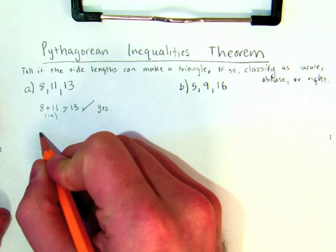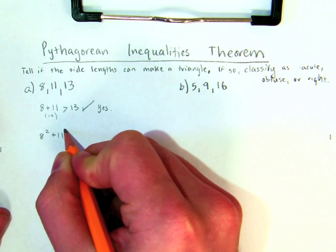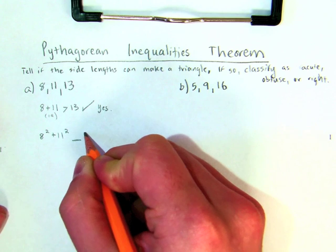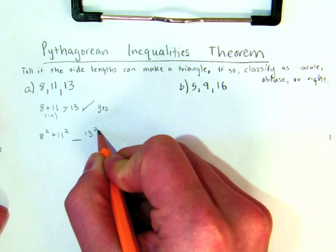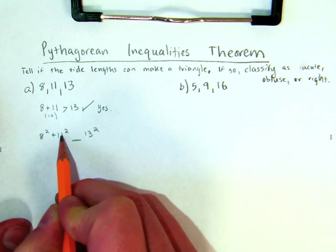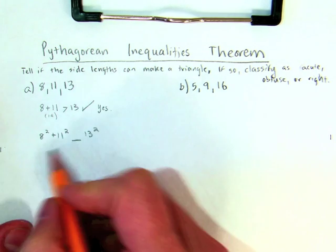So what I'm going to do here is I'm going to say 8 squared plus 11 squared, and I'm going to leave a blank here, and then put 13 squared, because the Pythagorean theorem says that if it's a right triangle, it's going to be 8 squared plus 11 squared equals 13 squared. But let's figure out if that's the case.